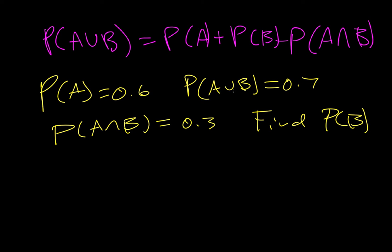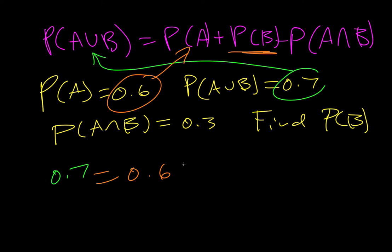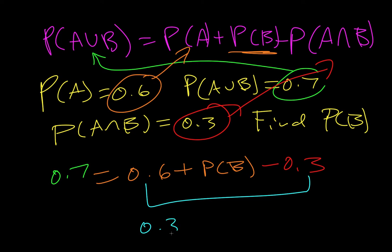So what we can do is just plug them in. This is just a simplification problem. So we're going to take this thing, plug it in here. So we get 0.7 equals this plugged in here, 0.6. We don't know what B is, so probability of B. And then the last thing, take this, plug it in here, and so that's minus 0.3. And then it's just some simple algebra. We can combine both of those to 0.3, subtract 0.3, so we get 0.4 equals P of B.